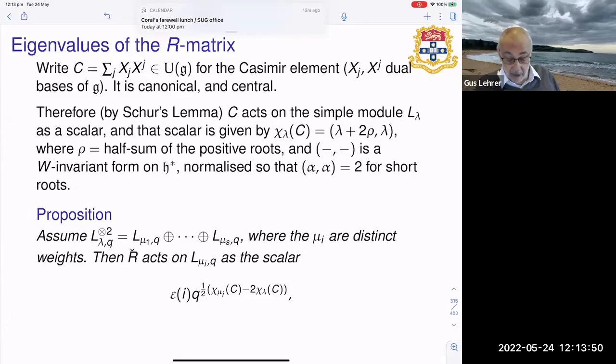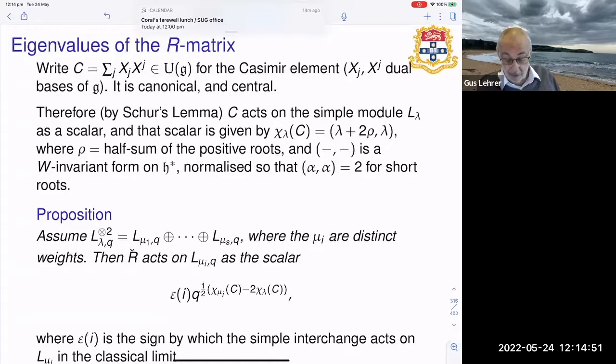The cases where this can be applied most effectively is where you start with a simple module corresponding to lambda. When you take its tensor square, the result is multiplicity free. You get mu_i distinct weights here. And then it's known that because R-check gives you an endomorphism of this module, it has to act as scalars on these, and those scalars can be shown to be equal to this quantity, something which Zhang and I proved many years ago.